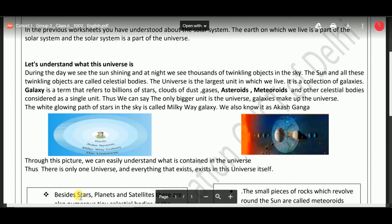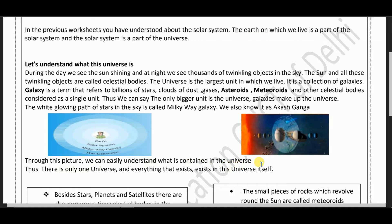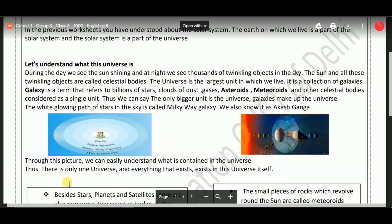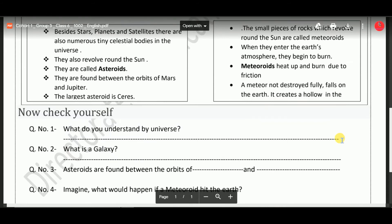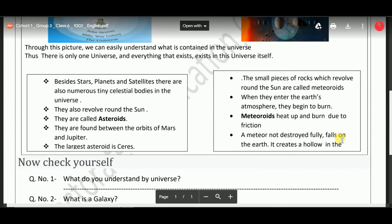Let's see. You can see one picture showing Earth, Milky Way galaxy, and the universe. Through this picture we can easily understand what is contained in the universe. Thus, there is only one universe and everything that exists, exists in this universe itself.